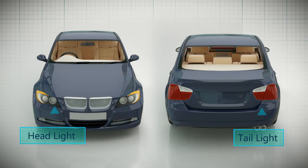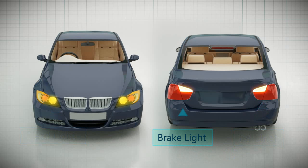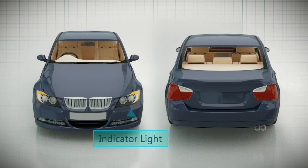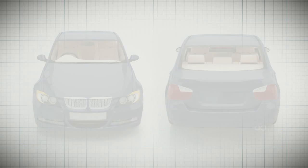There are lights in the front and rear of the car called headlights and tail lights respectively. Besides them, there are brake lights that get lit when brakes are applied, and indicator lights which are used to indicate the direction in which the car is going to turn.